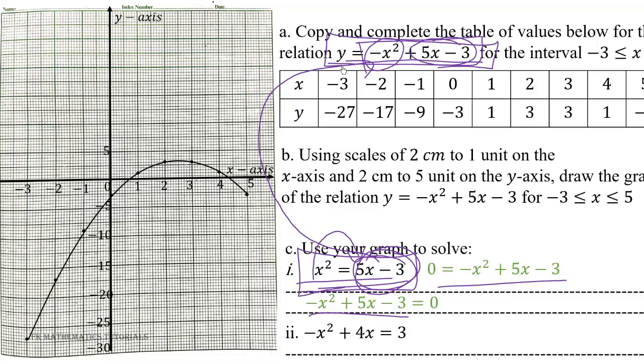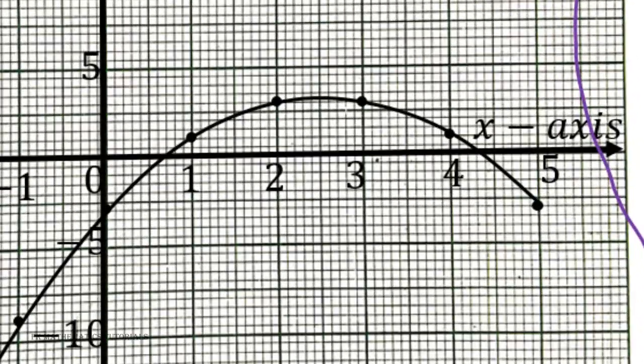We look for the x-values at which the graph intersects the x-axis. From the graph, we can see the values are at approximately 0.7 and 4.3. Each box on the x-axis represents 0.1, because with a scale of 2 centimeters to 1 unit and 10 boxes per 2 centimeters, one box equals 0.1. So x ≈ 0.7 and x ≈ 4.3.